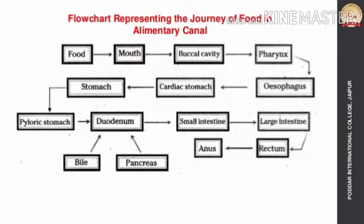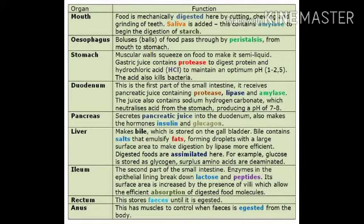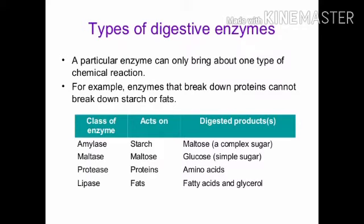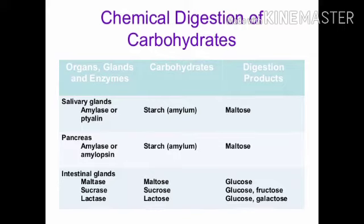Next is a flow chart representing the journey of food through the alimentary canal. Next is a chart showing the functions of all organs associated with digestion. Our next topic is types of digestive enzymes. These enzymes can bring about only one type of chemical reaction. The certain enzymes found in the associated glands are shown in the chart.